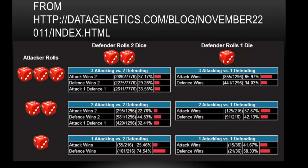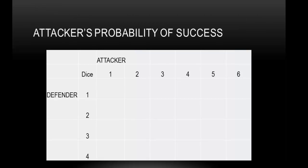So now we have the probability for success for the attacker in all different scenarios. We're going to use these probabilities as the probability for all the branches on our tree diagram. My goal is to complete this table right here.